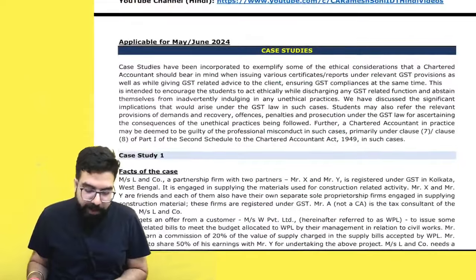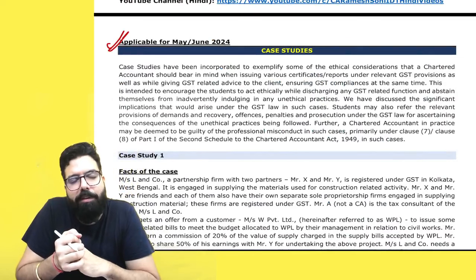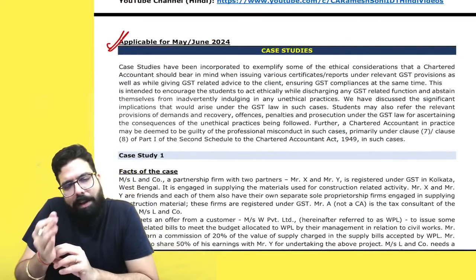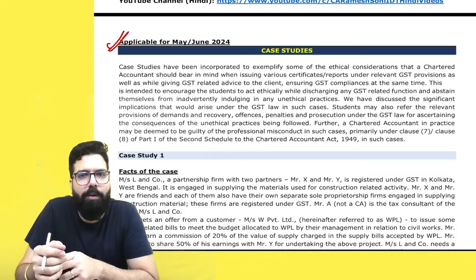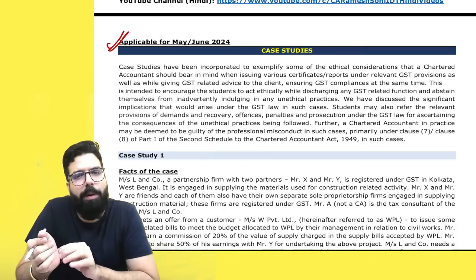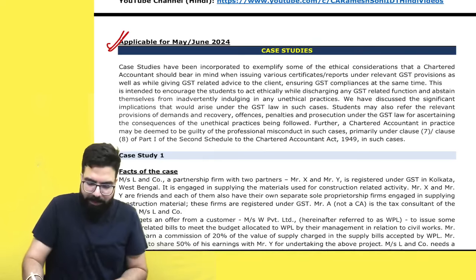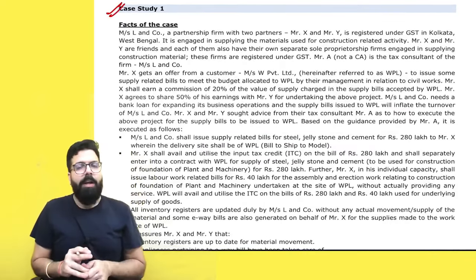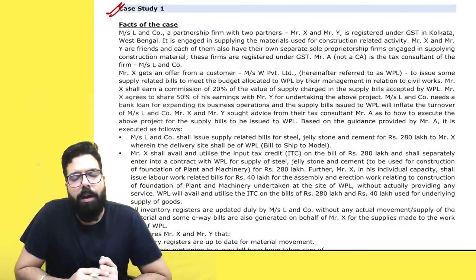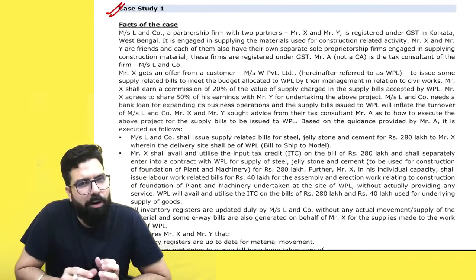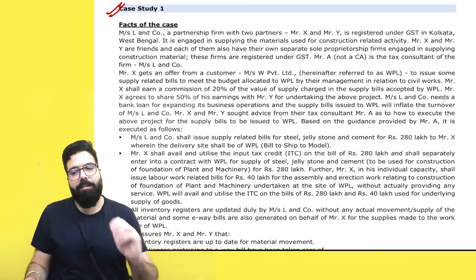Now we have the case studies. The offenses and penalties chapter has now been renamed as 'Offenses, Penalties and Ethical Practice,' and case studies have also been included in that chapter. For your May 2024 attempt onwards, case studies are applicable. The ICAI has given four case studies. Let's understand all of them. When learning the case study, you should have remembered your offenses and penalties chapter because a lot of linkage will come from it.